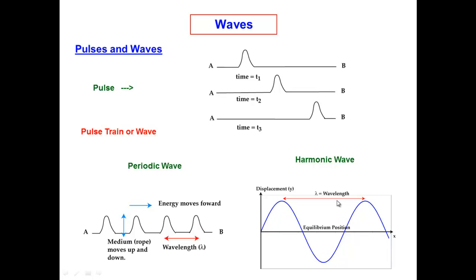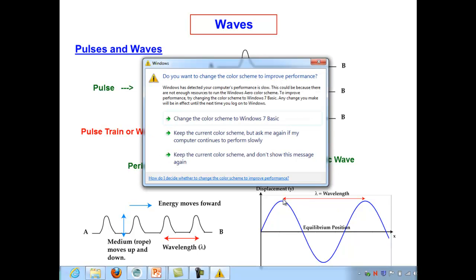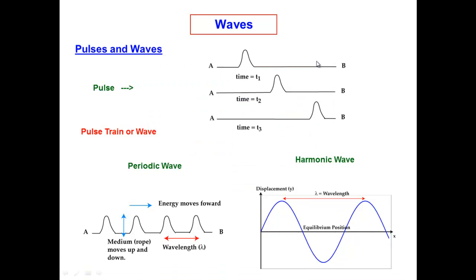Here we see a plot of Y, the vertical displacement of the string, as a function of x, the position along the string. The black line, the x-axis, simply shows the equilibrium position of the string if there were no disturbance. The wavelength is the distance between identical points on the wave.